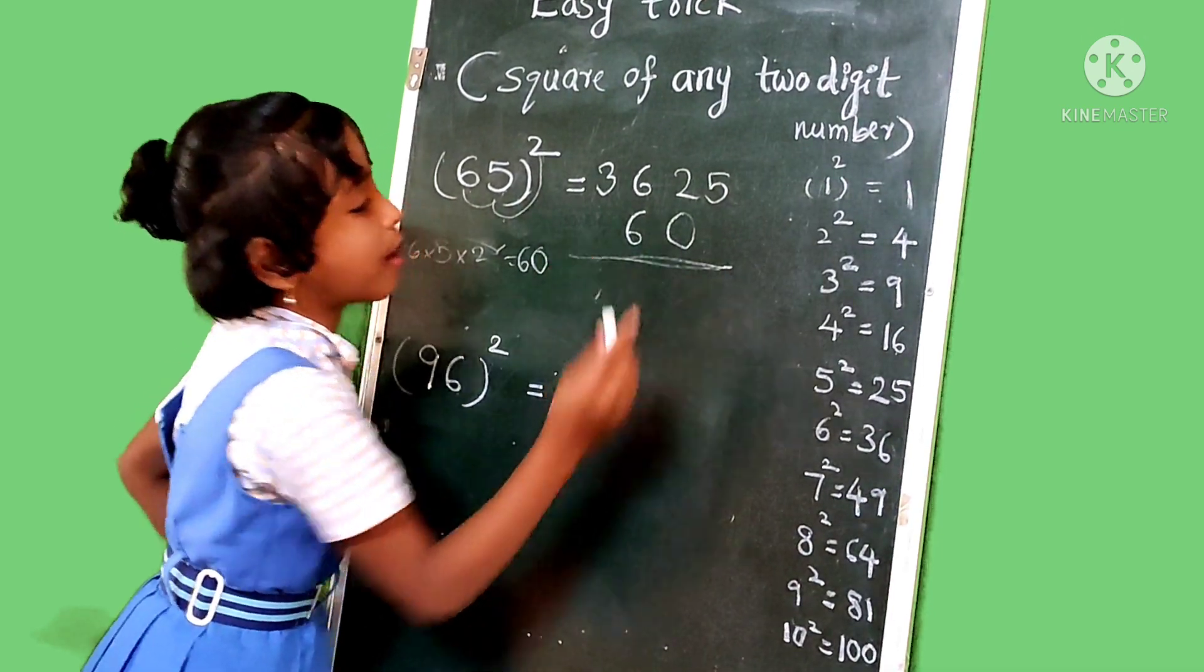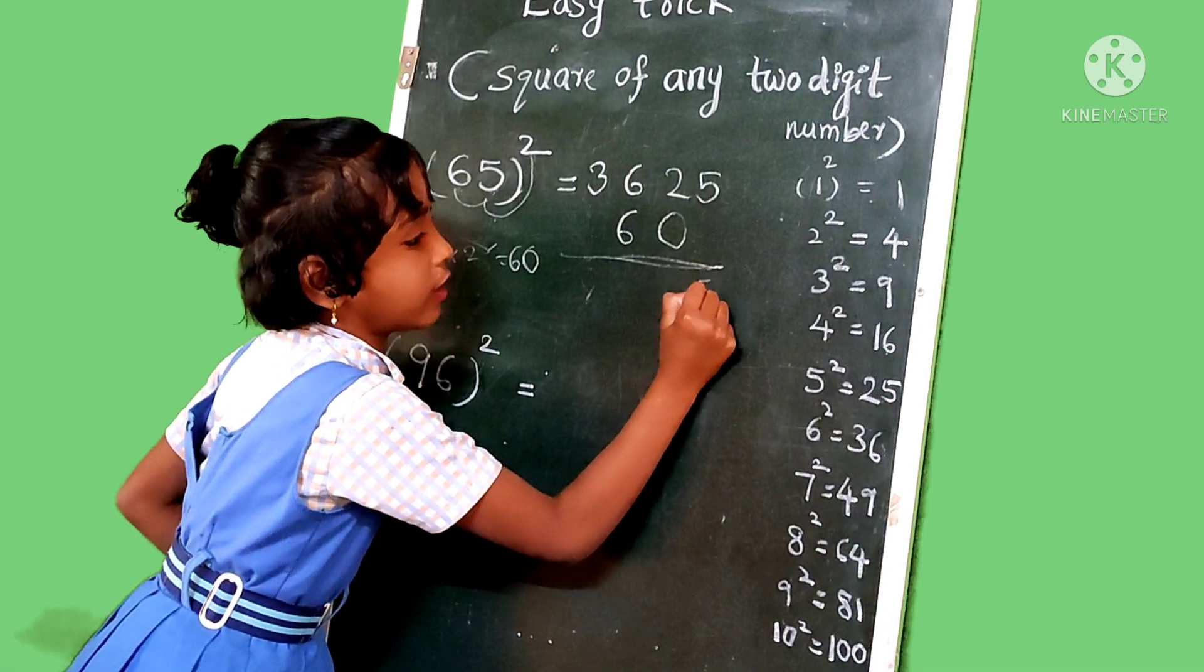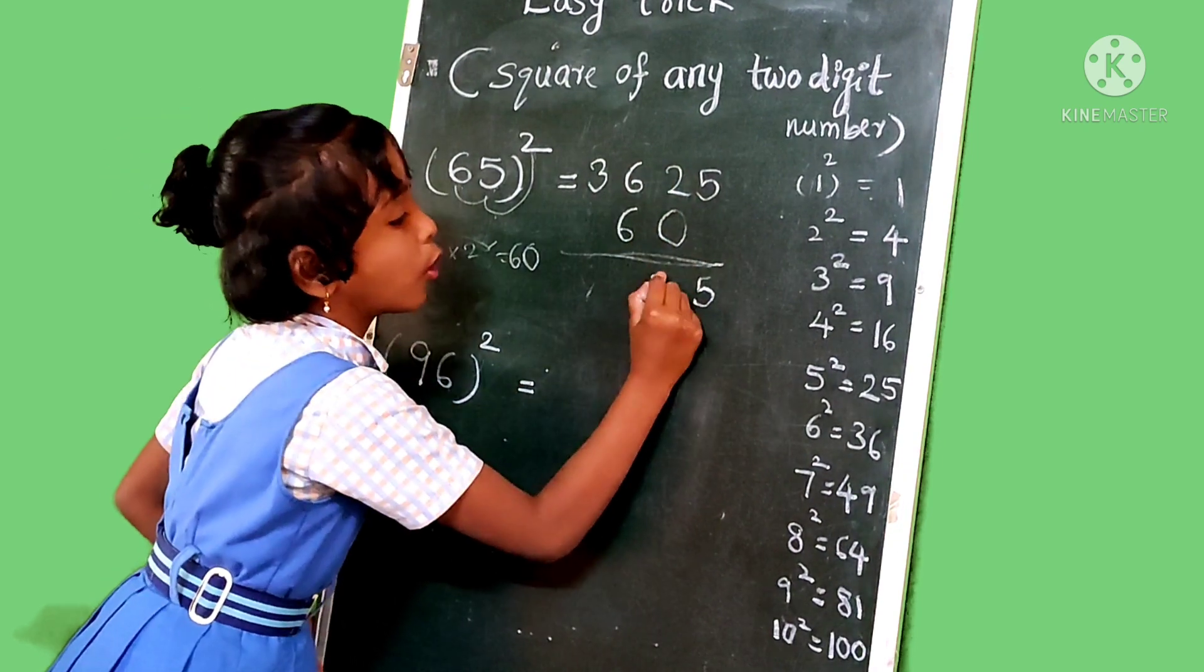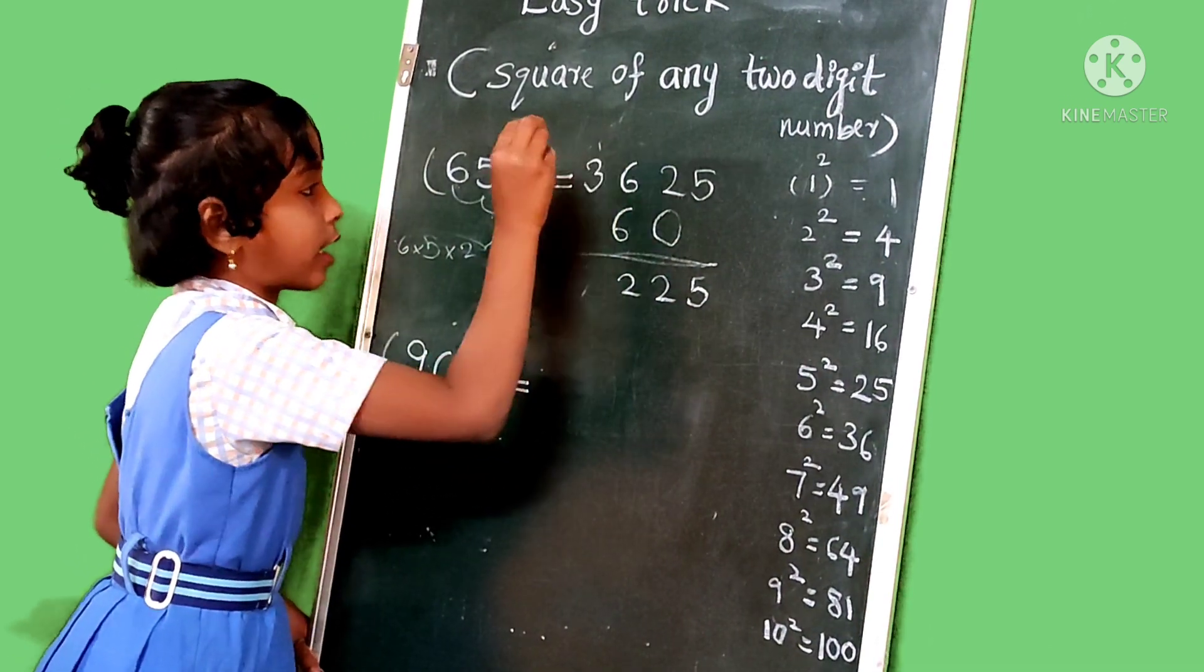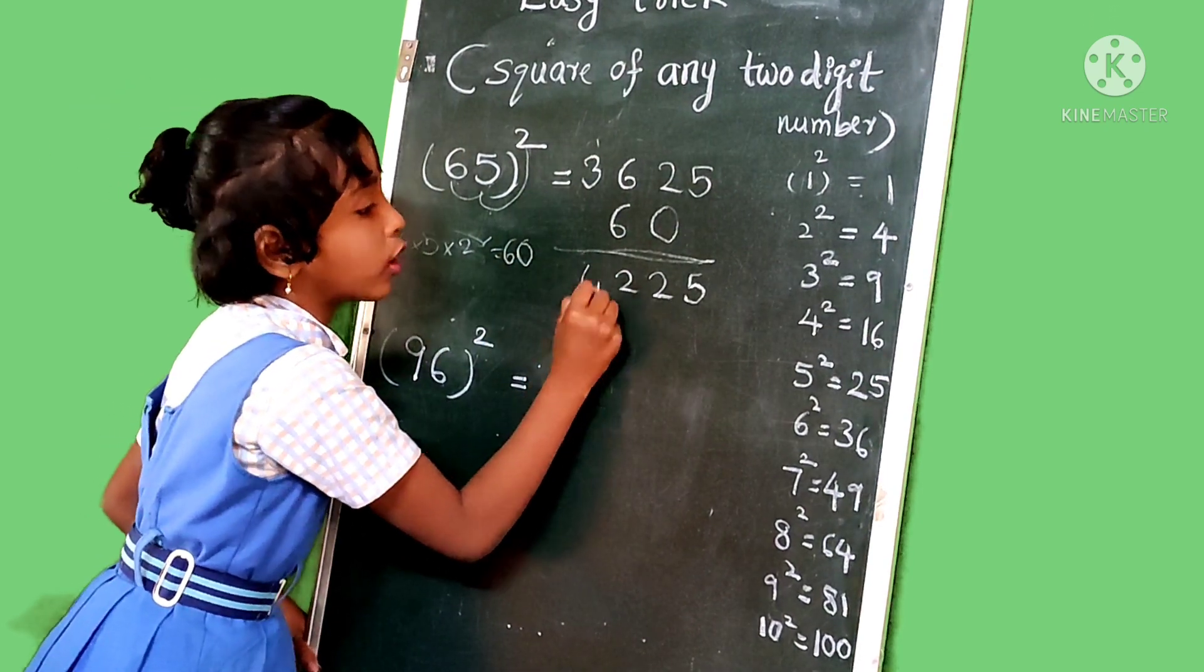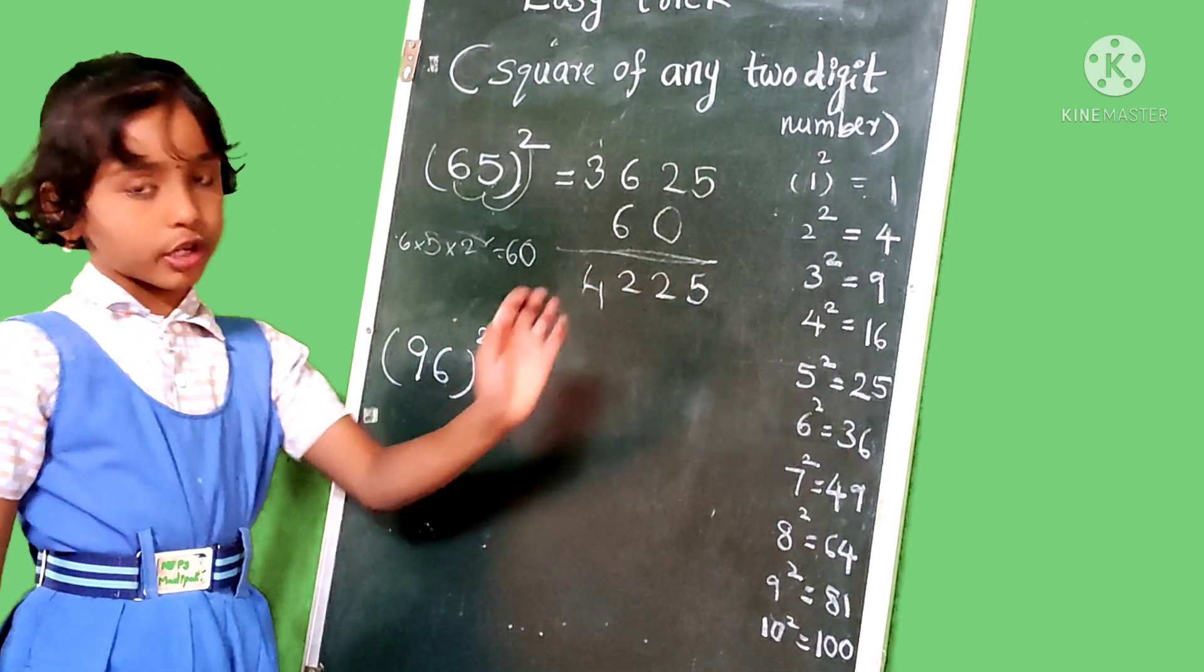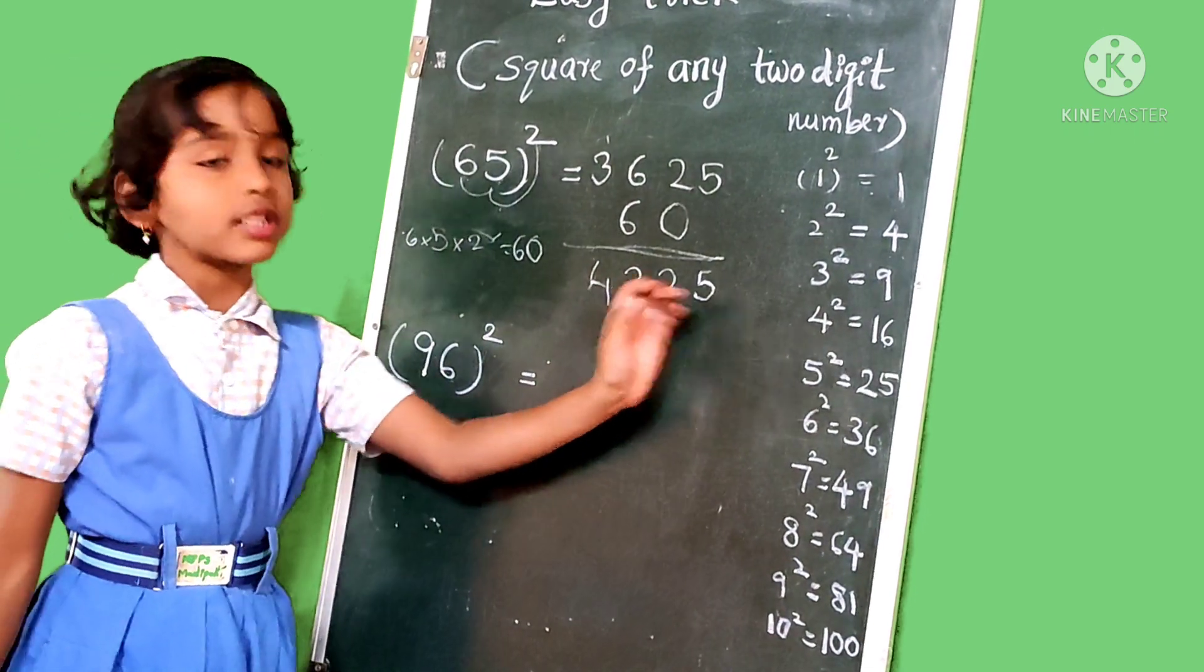And we add these numbers. 5, we write 5. 2 plus 0 is 2. 6 plus 6 is 12. We write 2 and carry over. 3 plus 1 is 4. The answer is 4225. 65 squared is 4225.